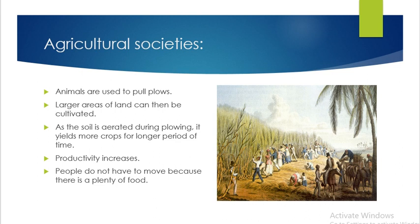Agricultural societies use animals to pull crops. Larger areas can then be cultivated. As the soil is aerated during plowing, it can grow more crops for a longer period of time. Productivity increased. People do not have to move because there is plenty of food. Agriculture allows for more area of cultivation and greater food quantity.